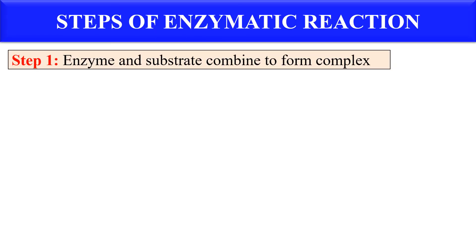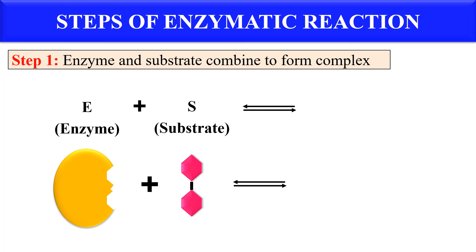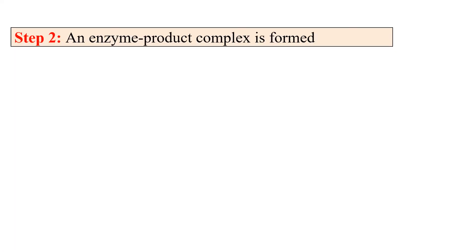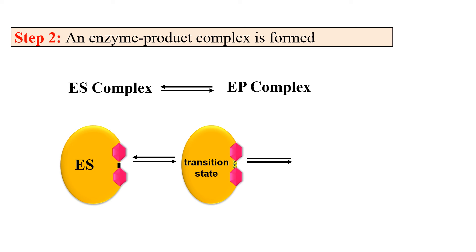Now, what are the steps of enzymatic reaction? The enzymatic reaction proceeds via the following steps. The first step is that the enzyme and the substrate molecule combine — you can see this is the enzyme molecule and this is the substrate molecule. They combine to form the enzyme-substrate complex (ES). The next step is that this enzyme-substrate complex is changed into the enzyme-product complex. There is an intermediate stage between these two called the transition state.